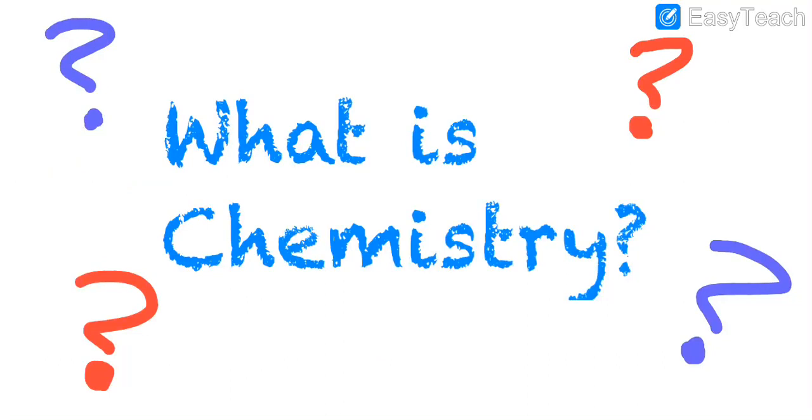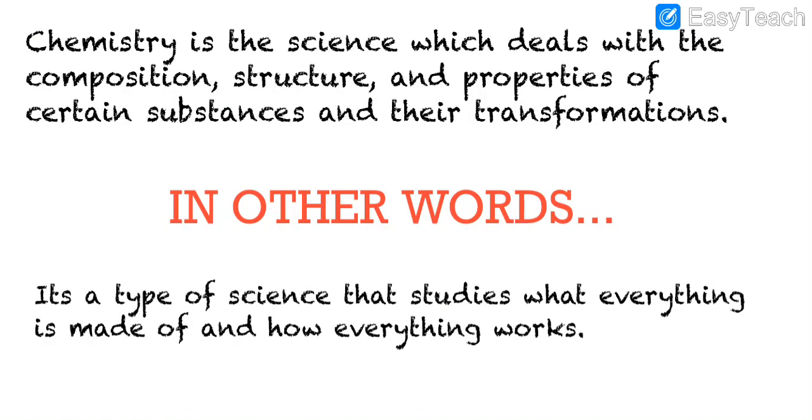Before we start, you might be wondering, what exactly is chemistry? Here is the formal definition. Chemistry is the science which deals with the composition, structure, and properties of certain substances and their transformations. In other words, it's a type of science that studies what everything is made of and how everything works.